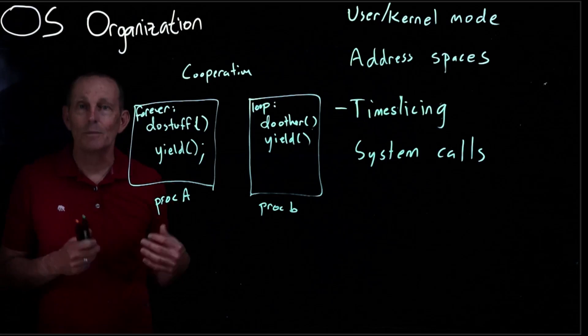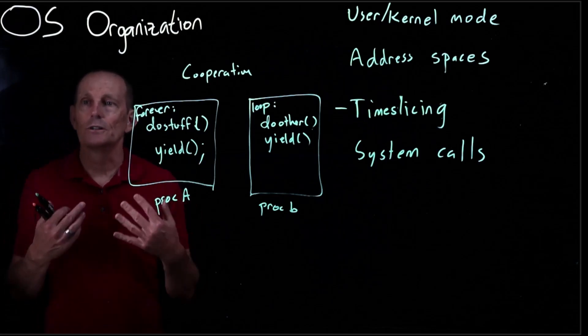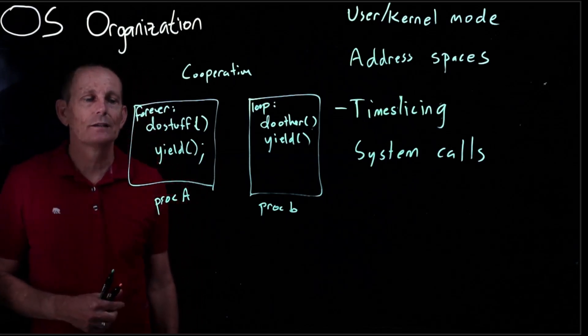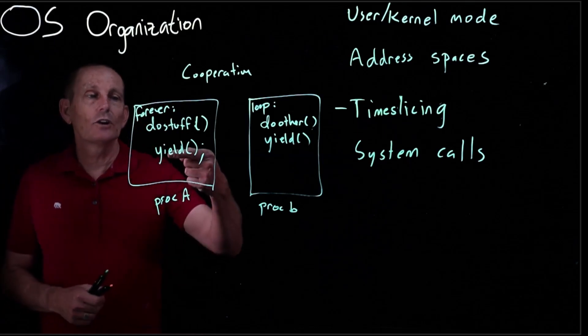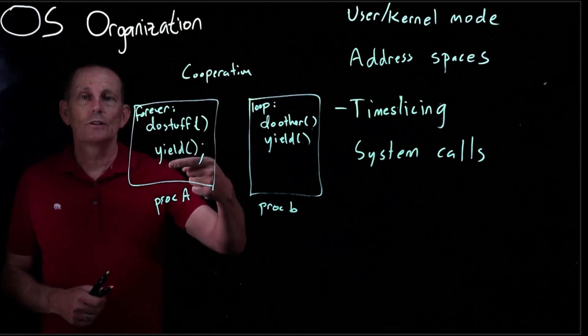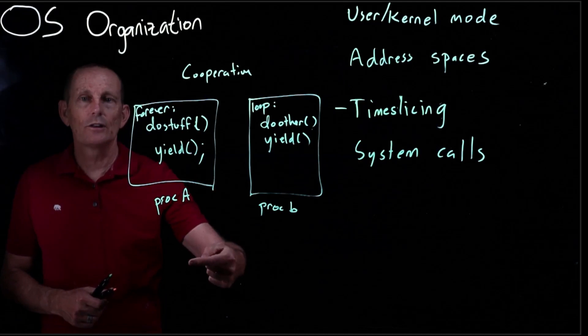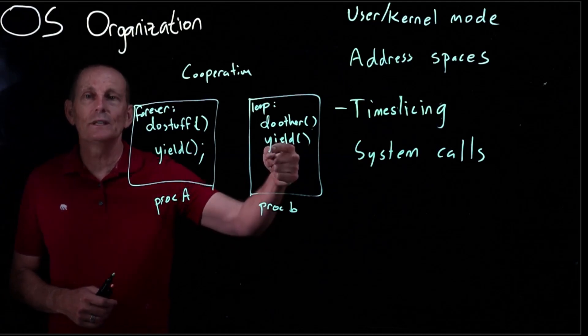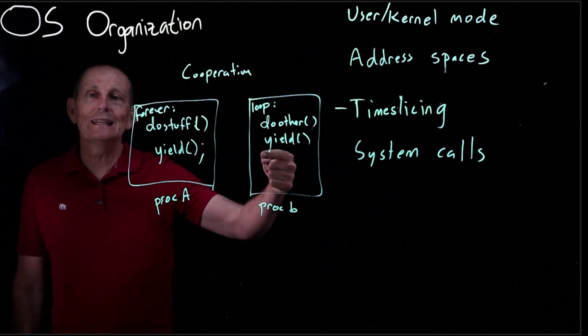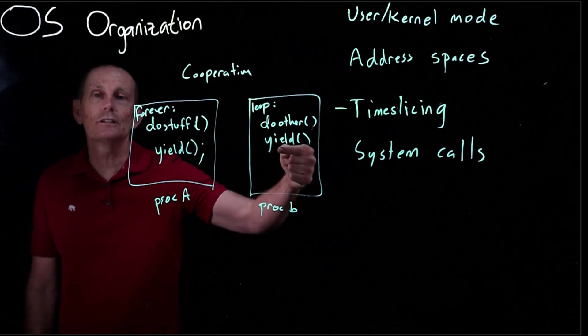So process A from its point of view makes a call to yield and it returns. However if process B is also running then when the call to yield happens it's gonna go into the kernel and then the kernel is gonna go back into process B. Where in process B? Well where process B last left off which is it called yield.